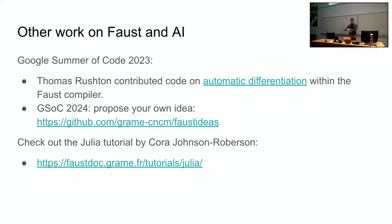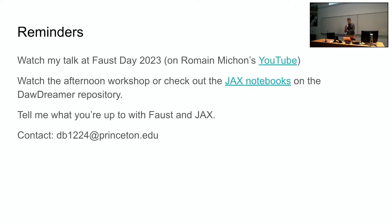So there's other work on Faust and AI, which is the Google Summer of Code 2023 project where Thomas Rushton contributed code on automatic differentiation within the Faust compiler. For GSOC 2024, you can propose your own idea by visiting this URL, and there's also the Julia tutorial by Core Johnson-Robertson, so check out that as well. Final reminders, you can watch my talk on Faust Day 2023 on Romain Michonne's YouTube where I cover some things that weren't covered in this presentation. There's actually zero overlap between what I've presented today and that, so do check that out if you're more interested. Also, you can get a head start on the notebooks that I'll talk about in the afternoon by using Jax notebooks on the Dawdreamer repository. Please tell me what you're up to with Faust and Jax. I would love to help others in using this research, and you can contact me at db1224 at Princeton.edu. Thanks.